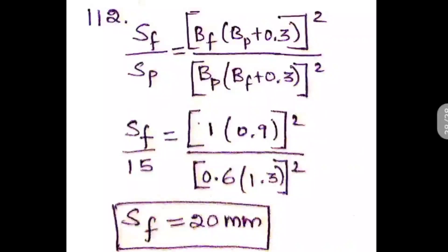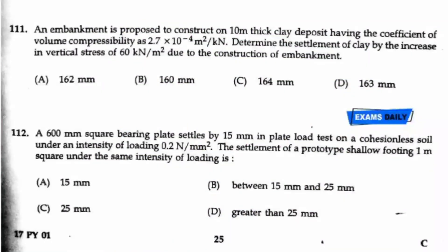The formula is: Sf/Sp = [Bf(Bp + 0.3) / Bp(Bf + 0.3)]². Here Bf is the width of the footing and Bp is the width of the plate. Substituting all known values except Sf, we get Sf = 20 mm. This is not directly listed in the answers, but option B (between 15 and 25 mm) is the right answer.